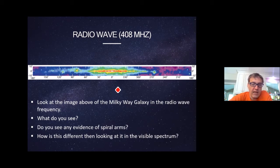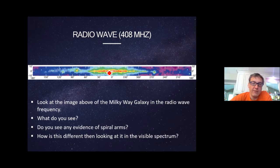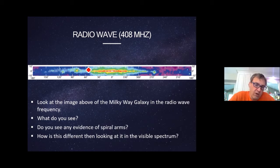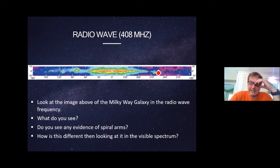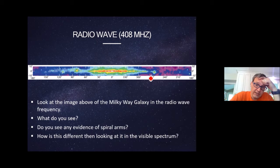This is the radio wave image. What do you see? The intensities of light are represented by color — these are wavelengths you cannot see, but the computer has assigned them colors so you can interpret them better. I want you to look at this little bulge right here and this little glob right here, and another one over here. What would those be? Those are evidence of spiral arms.